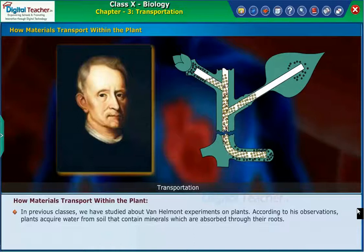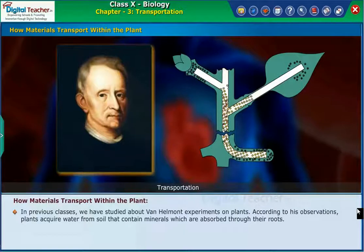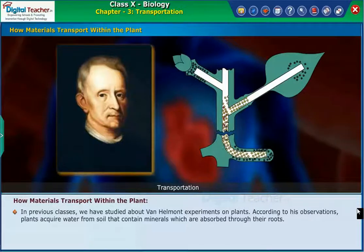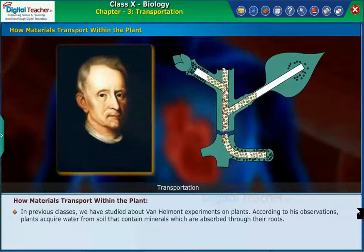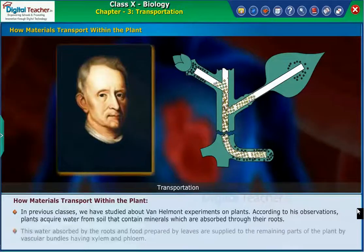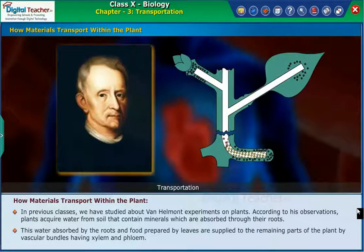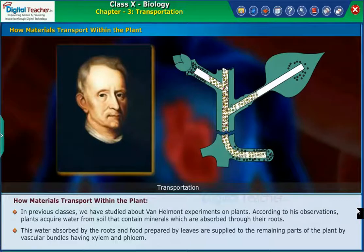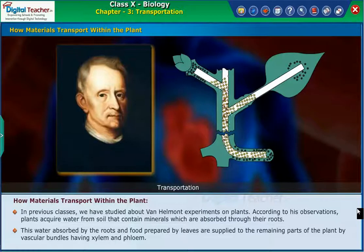In previous classes, we have studied about Van Helmond's experiments on plants. According to his observations, plants acquire water from soil that contains minerals, which are absorbed through their roots. This water absorbed by the roots and food prepared by leaves are supplied to the remaining parts of the plant by vascular bundles having xylem and phloem.